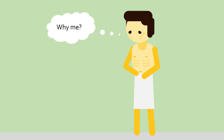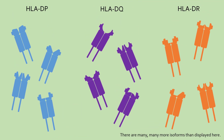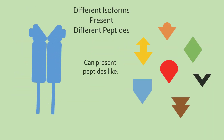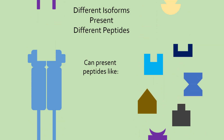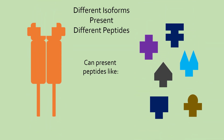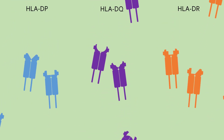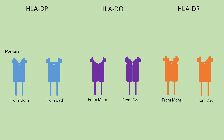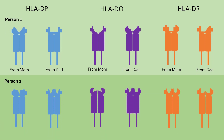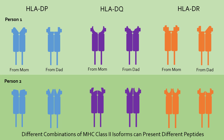This brings up an interesting question: why do some people have an immune response to gluten, while most people do not? This can be explained by variations in MHC class II molecules. There are three main types of MHC class II molecules — HLA-DP, DQ, and DR. These three types also have many different isoforms, each of which have a different binding pocket, allowing them to bind to different peptides. Each person has two isoforms of each type, inherited from each parent, making each person's combination of MHC class II molecules, as well as the range of peptides their dendritic cells can present, slightly different from another person.